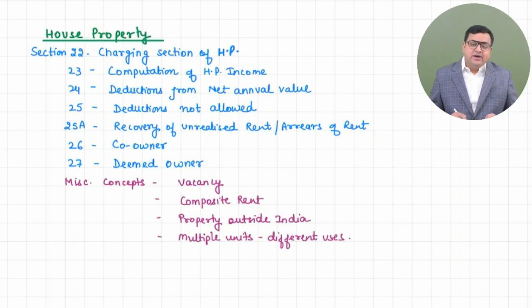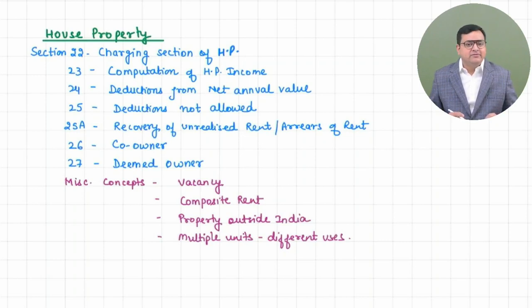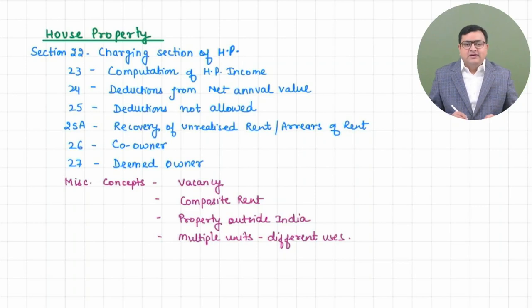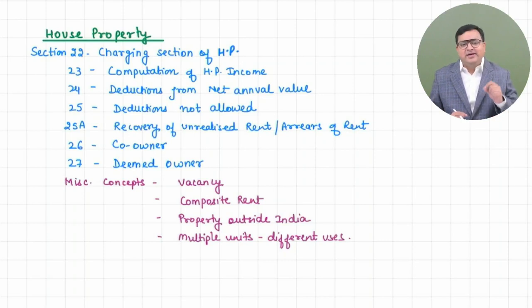Section 25A covers recovery of unrealized rent or arrears of rent. Whenever you recover your unrealized rent or arrears of rent, how you will treat that in your house property chapter, that we will see in Section 25A. Section 26 covers co-ownership — if there is a property owned by two or more owners, how you will treat that house property income in the hands of each co-owner.